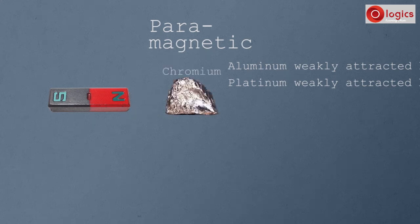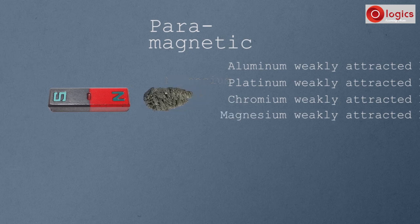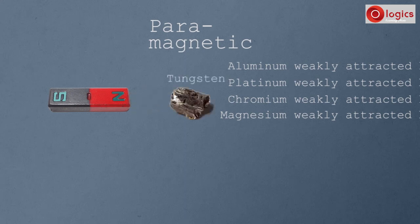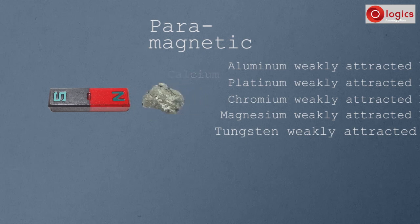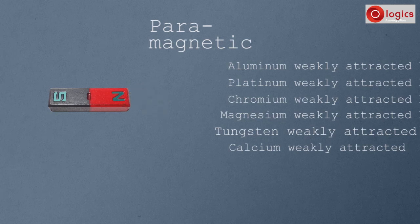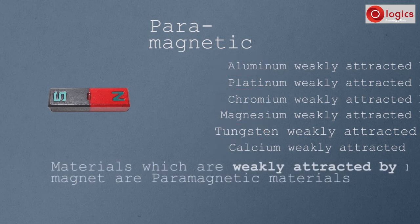This is the piece of chromium. Chromium is also weakly attracted by the magnet. This is the piece of magnesium. Magnesium is also weakly attracted by the magnet. This is the piece of tungsten. Tungsten is also weakly attracted by the magnet. This is the piece of calcium. Calcium is also weakly attracted by the magnet. These materials are weakly attracted by the magnet, so they are known as paramagnetic materials. Materials which are weakly attracted by the magnet are paramagnetic materials.